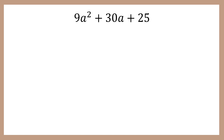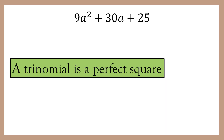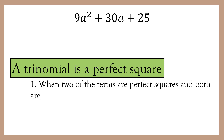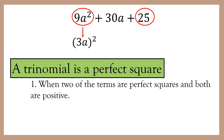How will you recognize a perfect square trinomial? A trinomial is a perfect square first when two of the terms are perfect squares and both are positive. Do we have perfect squares in the given trinomial? We have 9a squared and 25, and they are both positive, since 9a squared is the square of 3a and 25 is the square of 5.